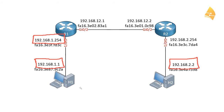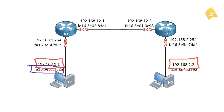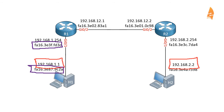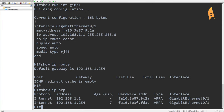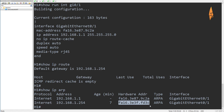Host 1 will create this IP packet with a source and destination, and then it will build an Ethernet frame with its own MAC address as the source and R1 as its destination. Now if host 1 doesn't know the MAC address of R1, then it has to do an ARP request. But in my case we can look at the ARP table — you can see it already did the ARP request and figured out the MAC address of R1.